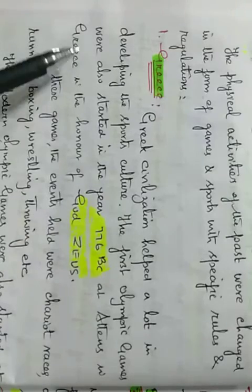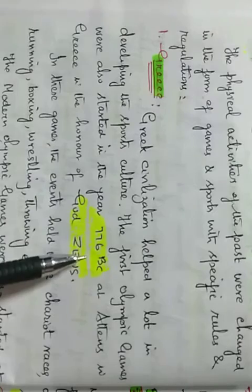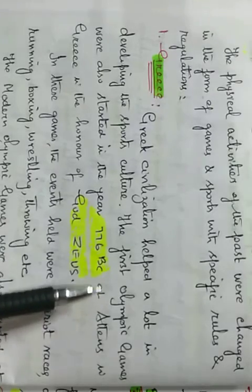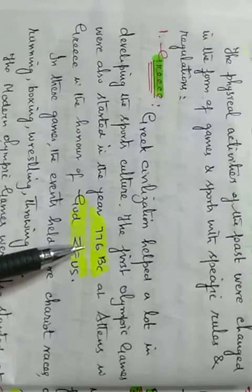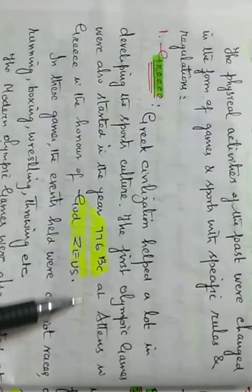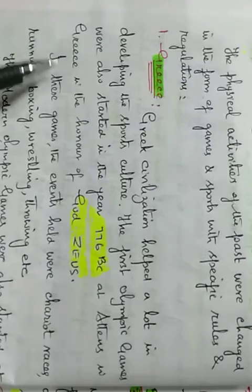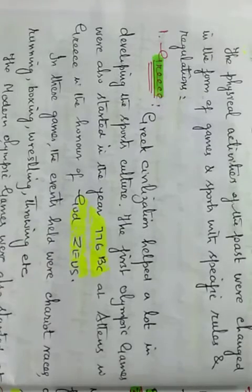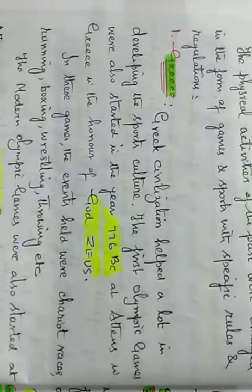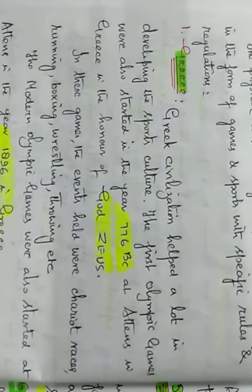The first Olympic Games were also started in the year of 776 BC. The first Olympic Games held, started in 776 BC at Athens. Athens is a place in Greece, in the honor of God Zeus.